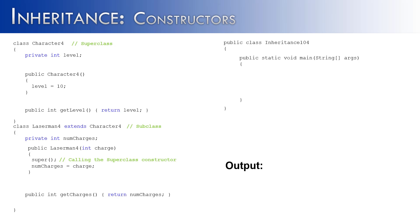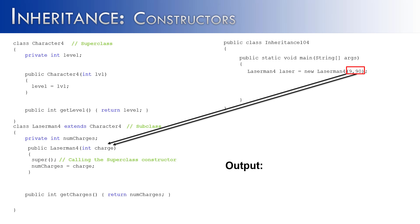What if we want to give the ability for the user or the client program to not only set the charges but also set the character level? We could do that by adding a variable called level in the constructor and assigning level to lvl. But how would we get the information to the superclass? The problem is that an object of the Laserman4 class is being created but there is no character4 object being created. So we have to use the constructor of the Laserman4 class to get information to the character4 class. You can see inside of the Laserman4 constructor I've added 9 and 90, but this is going to represent a problem because the Laserman4 constructor is only taking in one value — it's not taking in both the charge and the level.